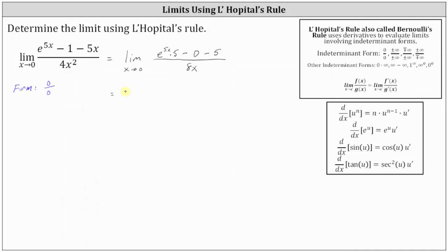Simplifying, we have the limit of 5e to the 5x minus 5, divided by 8x. Now if we try direct substitution, we still have the form 0 divided by 0: as x approaches 0, the numerator approaches 5 times e to the 0, which is 5, and 5 minus 5 is 0; and 8x approaches 0. Because we still have the indeterminate form 0 divided by 0, we can apply L'Hôpital's rule again.